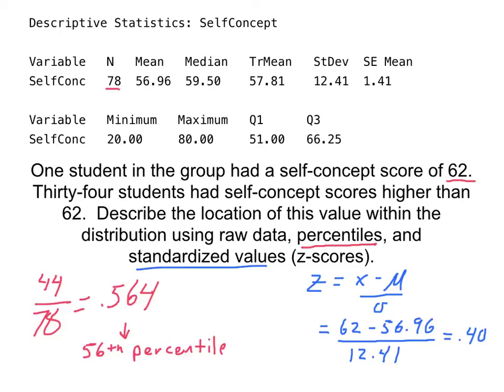In other words, this student is about 0.4 standard deviations greater than the mean score.